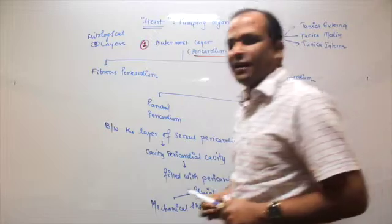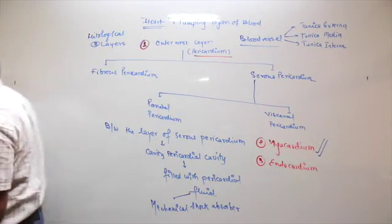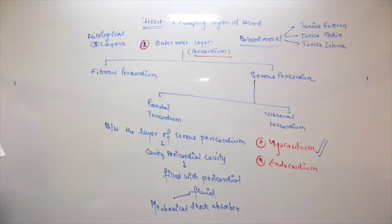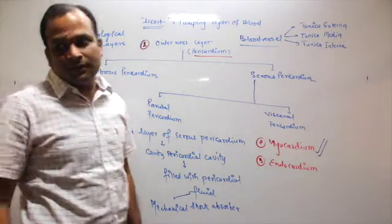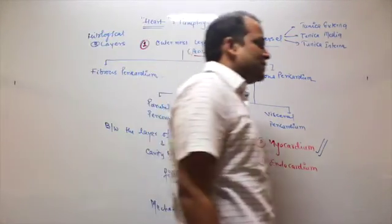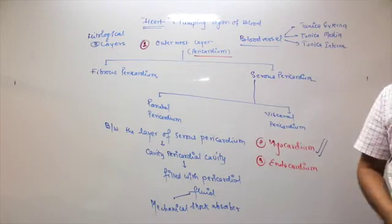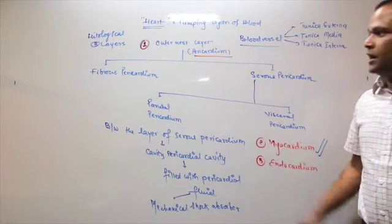Myocardium is the thickest layer. Why? Because the main function of the heart is pumping, and pumping is carried out by muscles. So the muscle layer is the thickest. From outside to inside: pericardium, myocardium, endocardium.